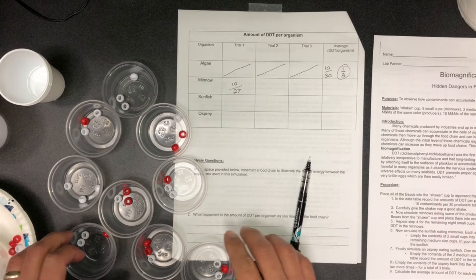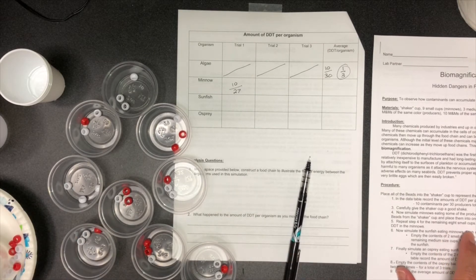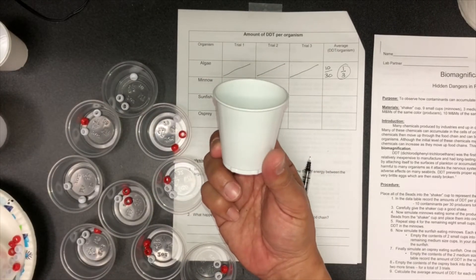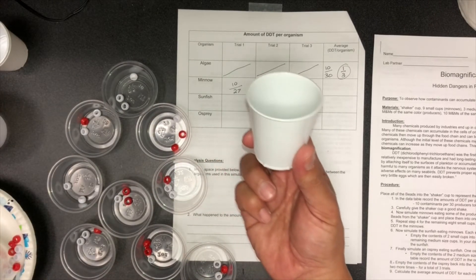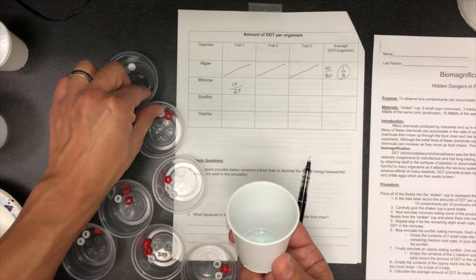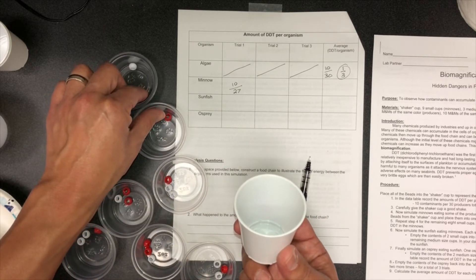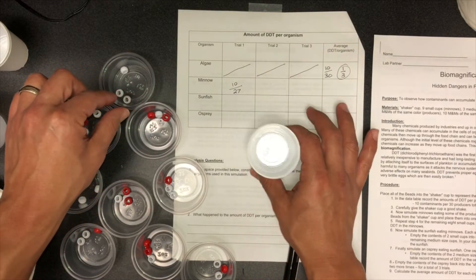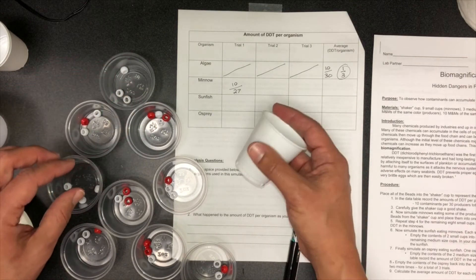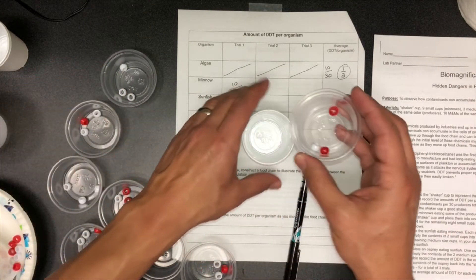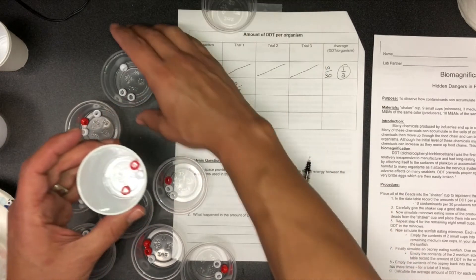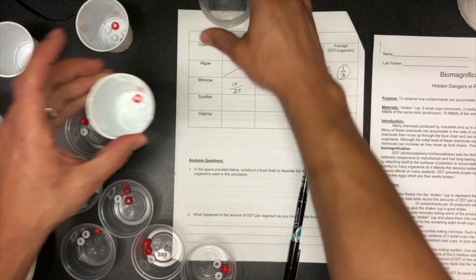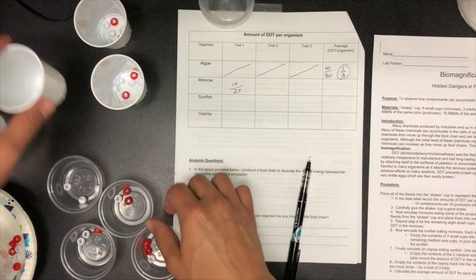The next step: now simulate the sunfish eating minnows. Each sunfish needs to eat two minnows. So here's your cup, this is a sunfish. The way you do that is you empty the contents of two smaller cups into the medium cup. Each sunfish eats two minnows, so the way you do that is you dump the beads into there. The next sunfish eats two, the next sunfish eats two.